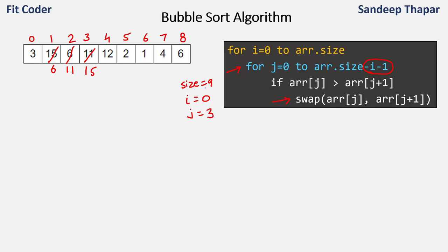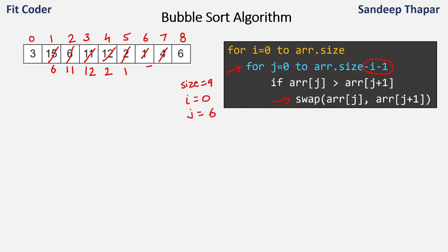Then j is incremented to 3. We compare array[3] with array[4] — 12 is smaller than 15, so again these will be swapped: 15 will come here and 12 will come here. Then j is 4, we compare array[4] with array[5] — these will be swapped: 15 will come here and 2 will come here. Then j is 5, we compare array[5] with array[6] — swapped: 15 here and 1 here. Then j is 6, comparing 15 and 4 — swapped. Then j is 7, we compare array[7] with array[8] — these will be swapped: 15 here and 6 here. So after the first iteration the array state is 3, 6, 11, 12, 2, 1, 4, 6, 15.